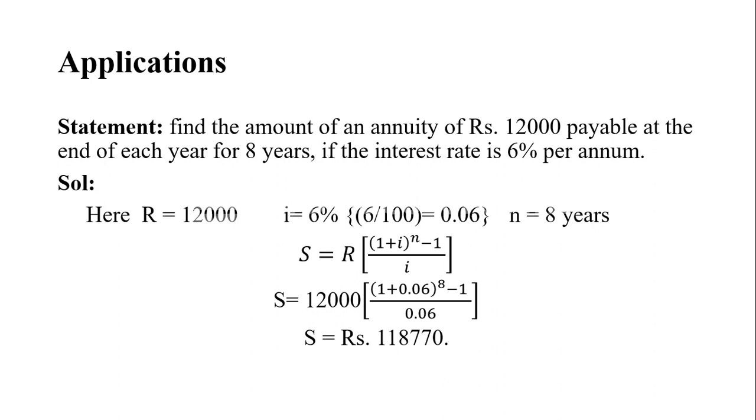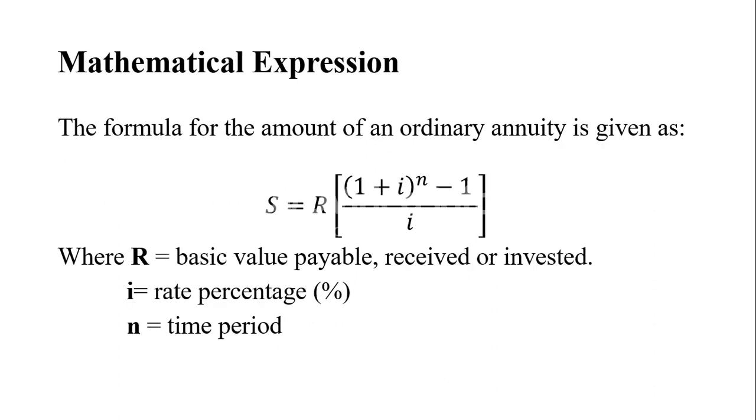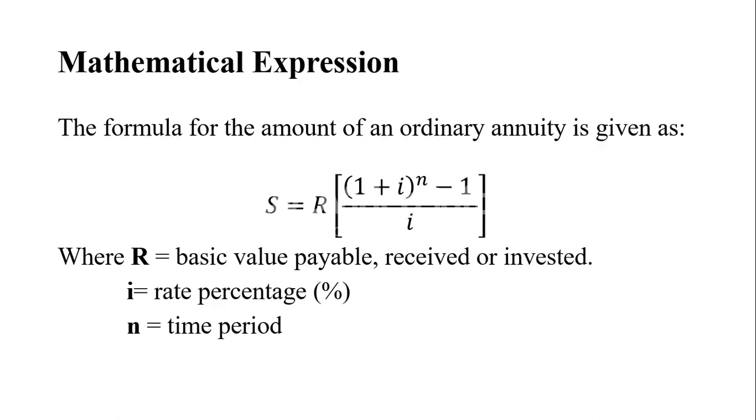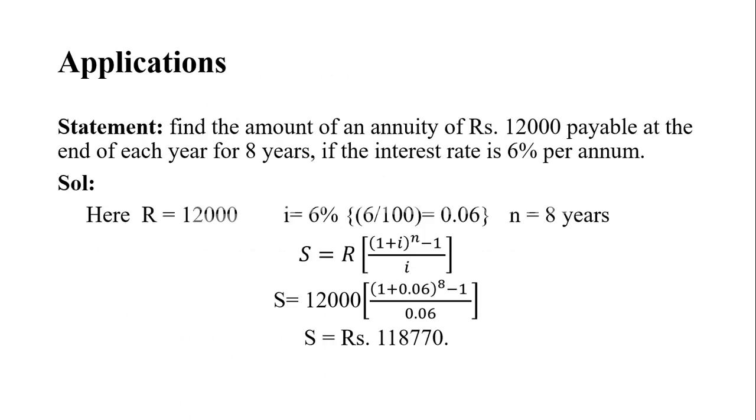The time period is eight years, so n should be 8. The interest rate is 6% per annum, so i = 6% = 6/100 = 0.06, and n = 8 years. After substituting the values in the formula, S = 12000[(1+0.06)^8 - 1]/0.06, the amount will be Rs. 118,770.